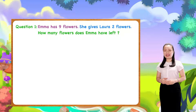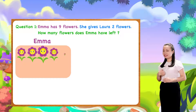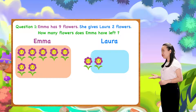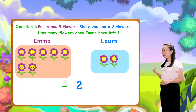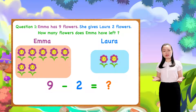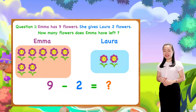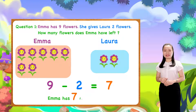Let's find the answer together. Emma has 9 flowers. She gives Laura 2 flowers. We subtract 2 from 9 to find the number of flowers Emma has left. So, 9 minus 2 equals 7. We conclude. Emma has 7 flowers left.